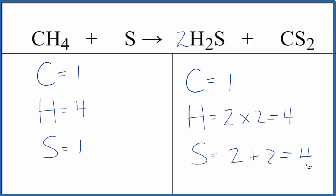So now we have four sulfurs. We're almost there. We just need to get four sulfurs on this side. This equation is balanced.